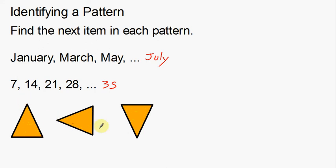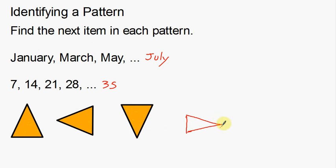The shape goes up, then left, then down, and then it's going to point to the right. That will be the next shape in the pattern. The isosceles triangle is made intentionally long on one side to show it's pointing to the right. So we have: pointing up, pointing left, pointing down, and then pointing to the right — rotating counterclockwise 90 degrees each time.